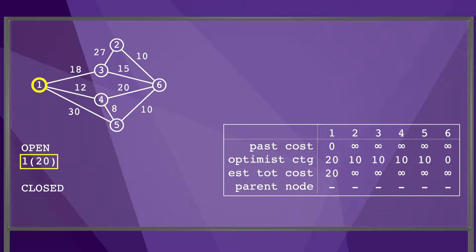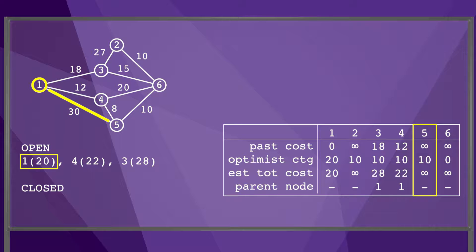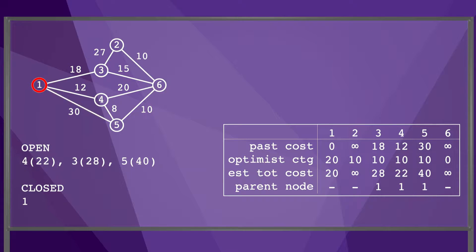We will explore all edges leading away from node 1. The first edge goes to node 3. Node 3 currently has no parent, so we update it to indicate it can be reached from node 1. The cost to reach node 3 is 18, so we update the past cost to 18, making the estimated total cost 28. We add node 3 to the Open list in sorted order. Next, we take the edge from node 1 to node 4, updating its parent to node 1, its past cost to 12, and its estimated total cost to 22. Node 4 is inserted before node 3 in Open because its estimated total cost is lower. Finally, we take the edge from node 1 to node 5, updating its parent to node 1, its past cost to 30, and its estimated total cost to 40, then insert it into Open.